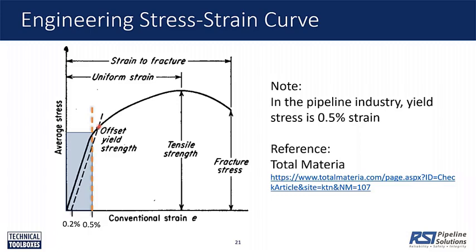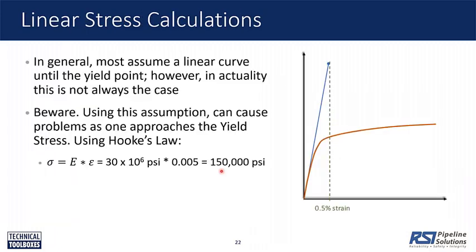Usually in many cases, when we perform stress analysis on a pipe, we assume the pipe is linear elastic all the way — we basically ignore plasticity. Especially in surface loading analysis, we just assume the pipe is linear. For a pipe to be linear elastic means we can use Hooke's Law to correlate stress and strain. Under uniaxial conditions, stress equals the elastic modulus — or Young's modulus — times the strain.